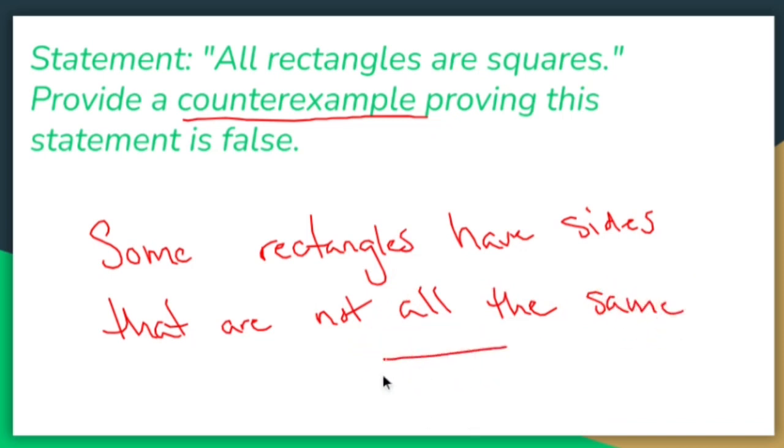For example, this guy, if I can draw correctly, is a rectangle and these two guys are the same. These two guys are the same. That's a rectangle, but it's not a square.